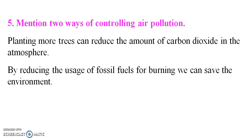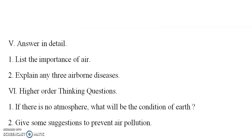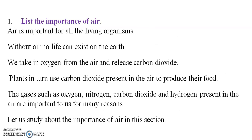Mention two ways of controlling air pollution: by reducing the use of fossil fuels and banning them, and we can plant more trees to control the carbon dioxide levels. These are the answers in detail.